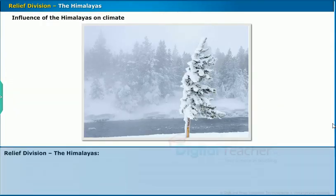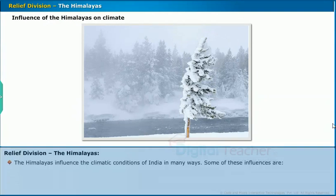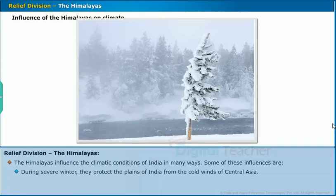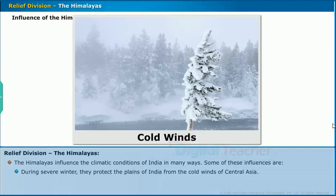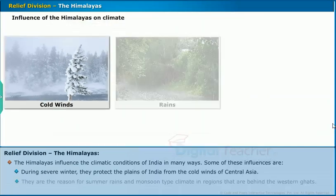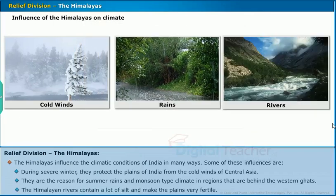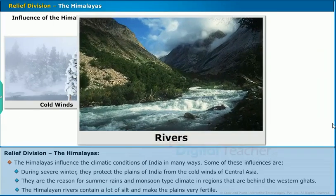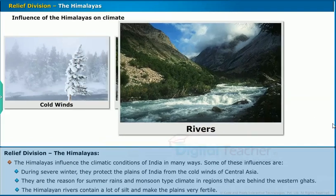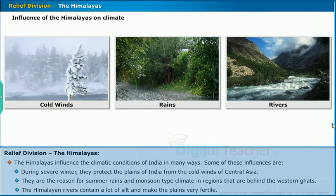After learning about the different ranges of the Himalayas, let us learn about their influence on climate. The Himalayas influence the climatic conditions of India in many ways. During severe winter, they protect the plains of India from the cold winds of Central Asia. They are the reason for summer rains and monsoon-type climate in regions behind the Western Ghats. The Himalayan rivers contain a lot of silt and make the plains very fertile.